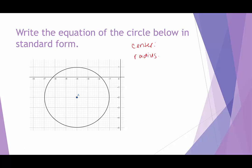The center looks like that's the point labeled A, and that would be negative 4, negative 2. The radius — we can determine it by counting to the edge, going either up, down, left, or right. If I go to the right, that's 1, 2, 3. So it appears the radius is 3.